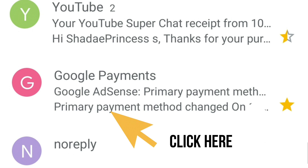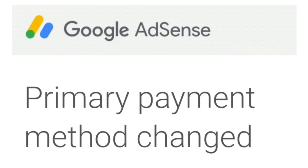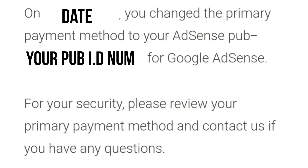As expected, any changes you make to your Google AdSense account will always generate a confirmation email in your Gmail. If you go to your Gmail account you'll see an email from Google Payments saying 'Primary payment method changed,' the date it was changed, and your publisher ID number for Google AdSense. It further goes on to say: 'For your security, please review your primary payment method and contact us if you have any questions.'